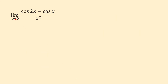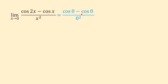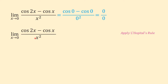Another example: find the limit of (cos(2x) − cos(x)) over x² as x approaches 0. If we plug in 0 for x, we get cos(0) − cos(0) over 0², which is 1 − 1 = 0 in the numerator and 0 in the denominator. Because the limit is the indeterminate form 0/0, we can apply L'Hôpital's rule. Finding the derivative of the numerator is a little tricky, especially the derivative of cos(2x).